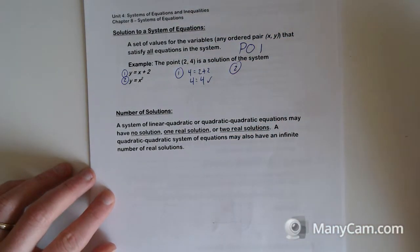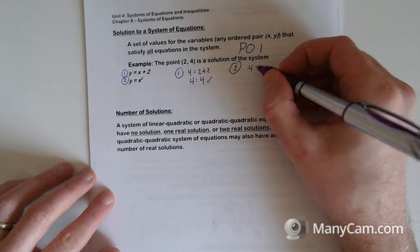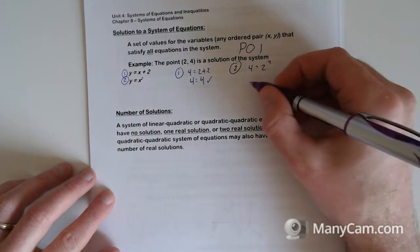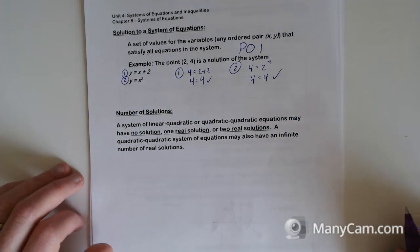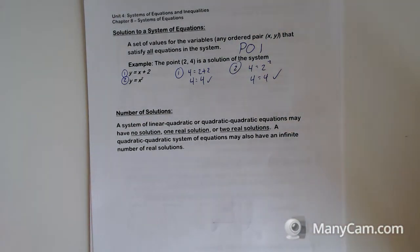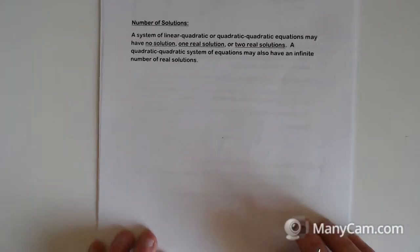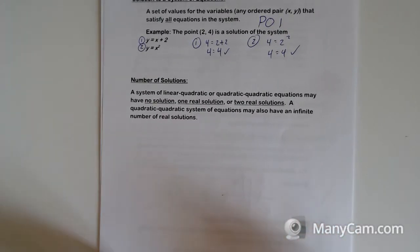But in order to be a solution, the parabola also must travel through that point. So let's test it here as well. 4 equals 2 squared, so 4 equals 4. Both the line and the parabola travel through this point, therefore it must be a solution, a point of intersection between them. Very easy to check.